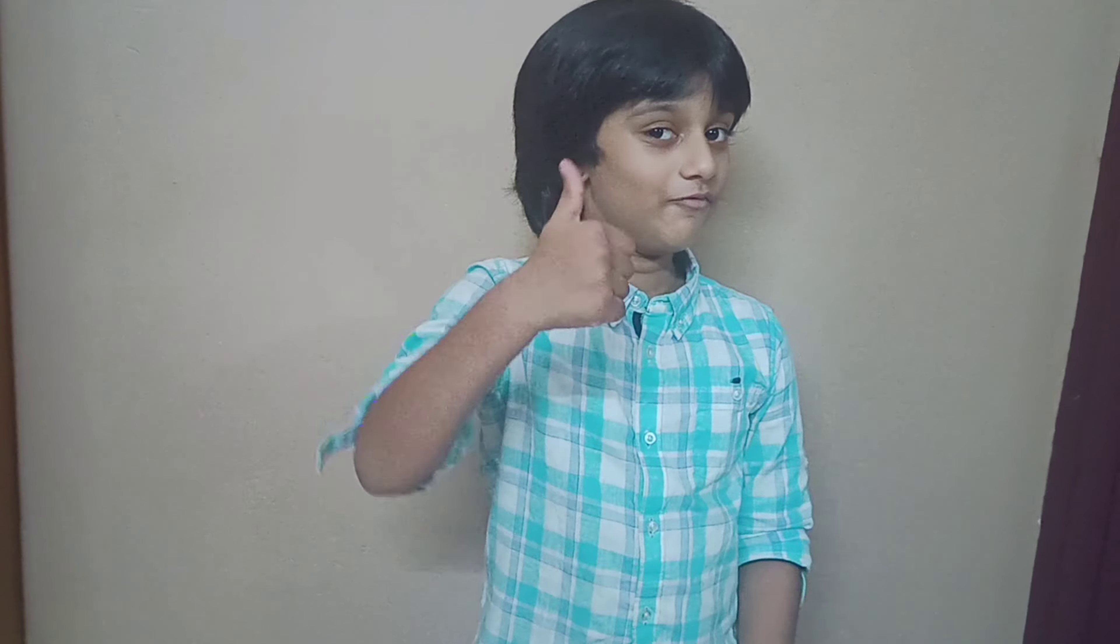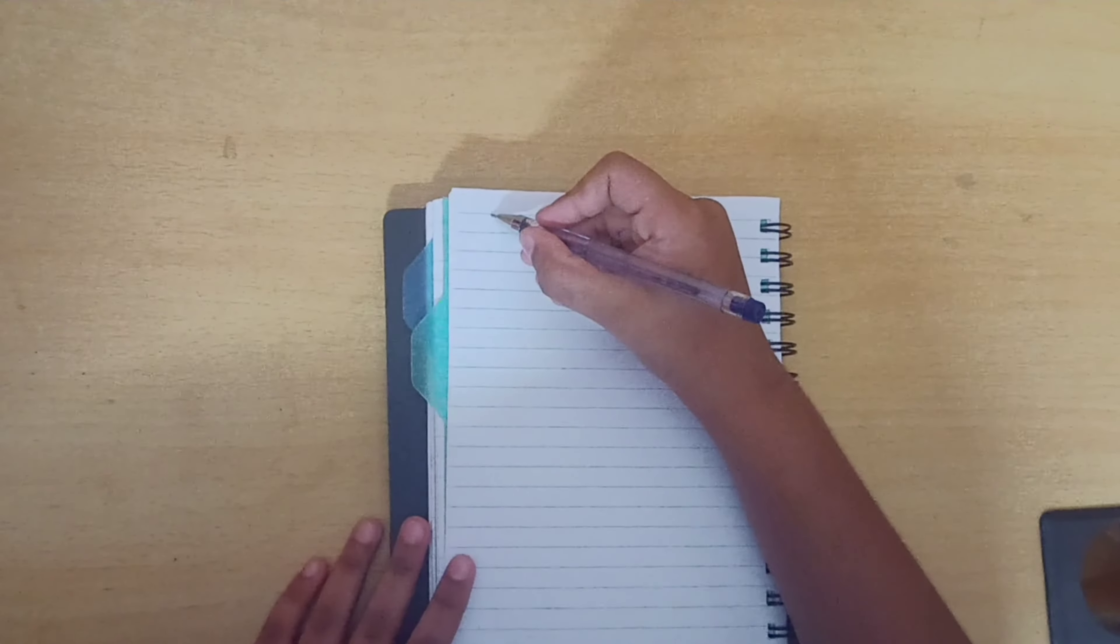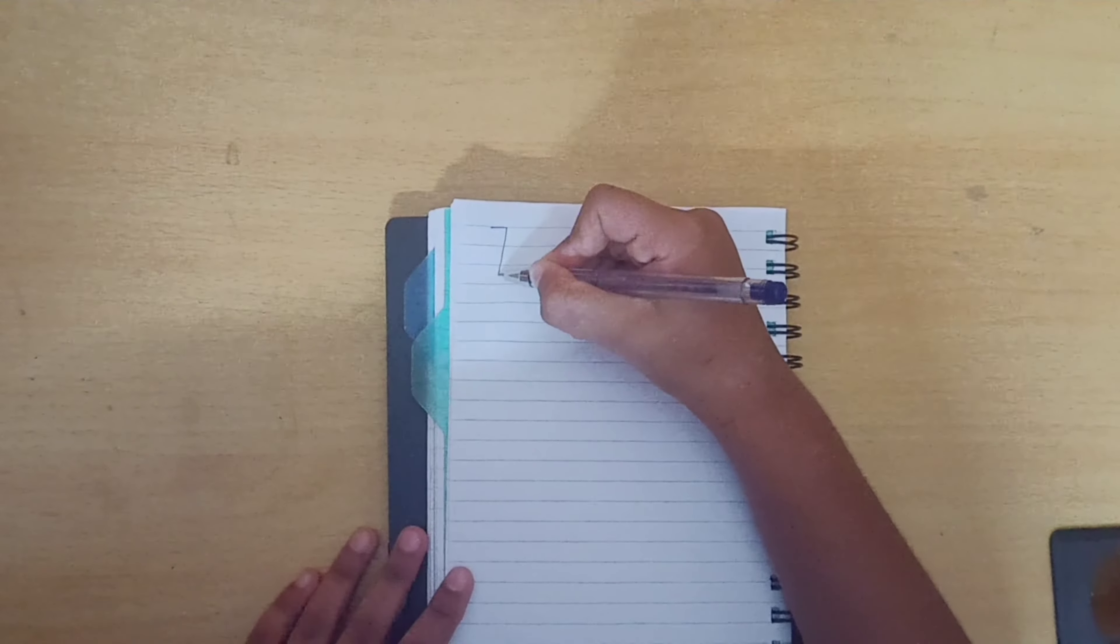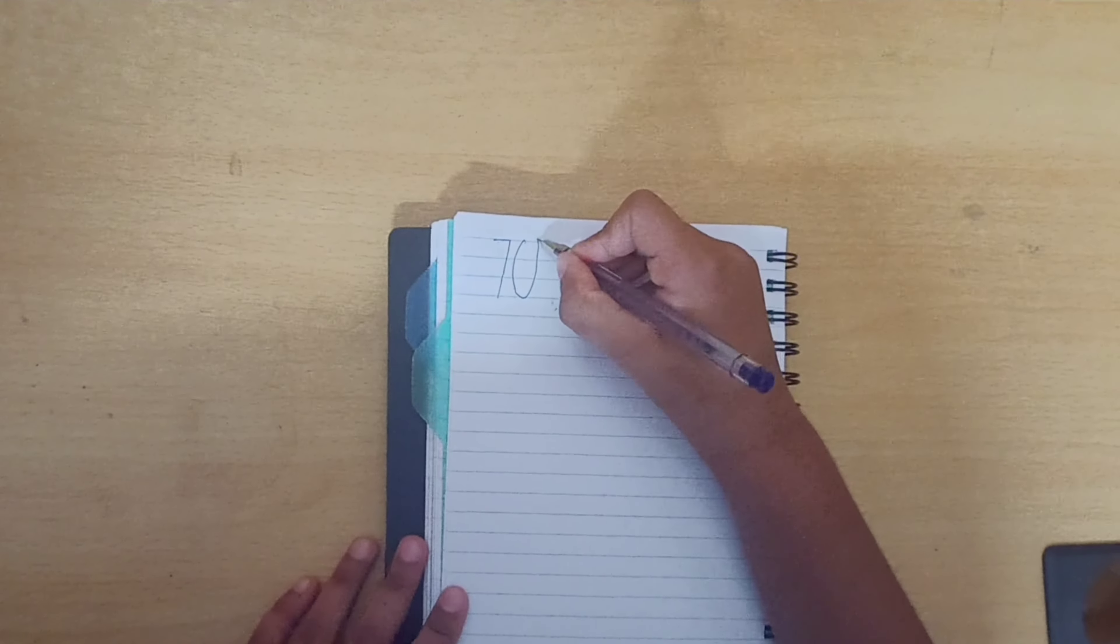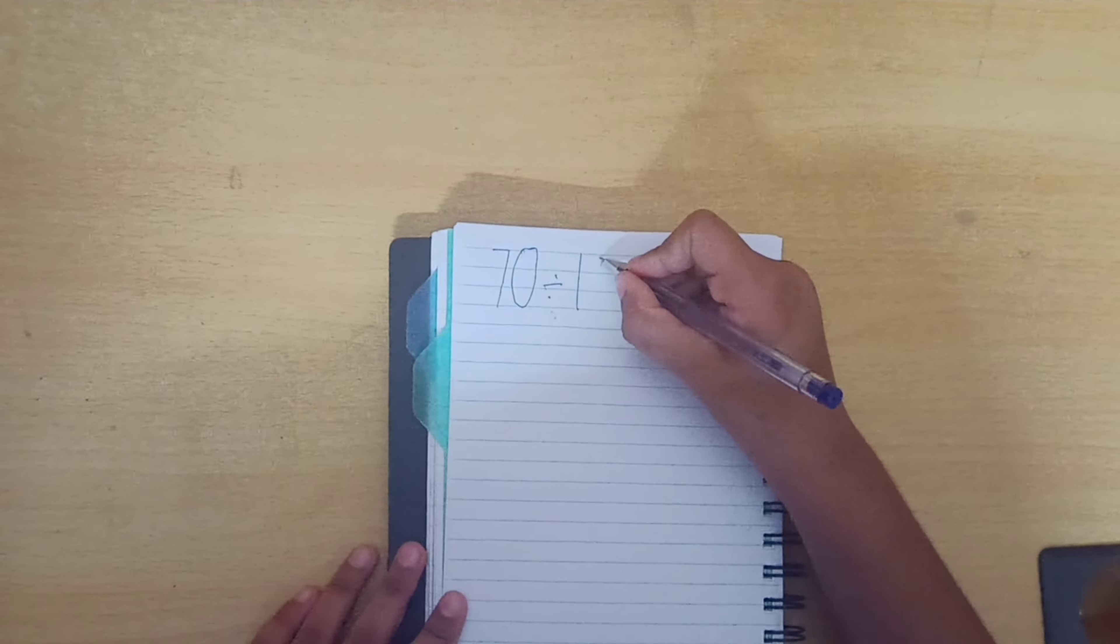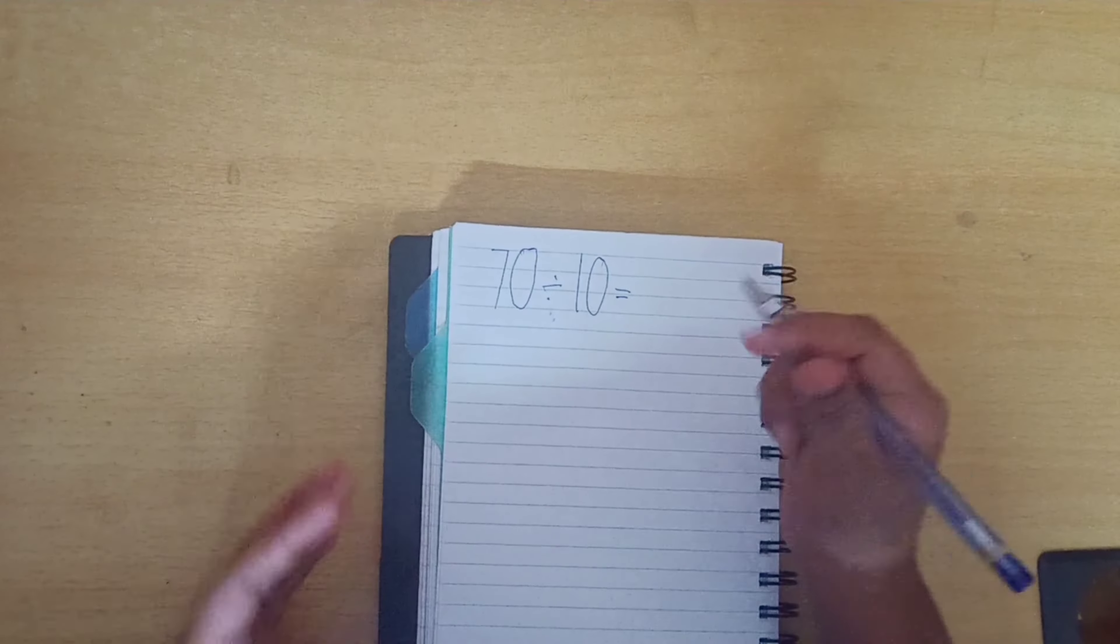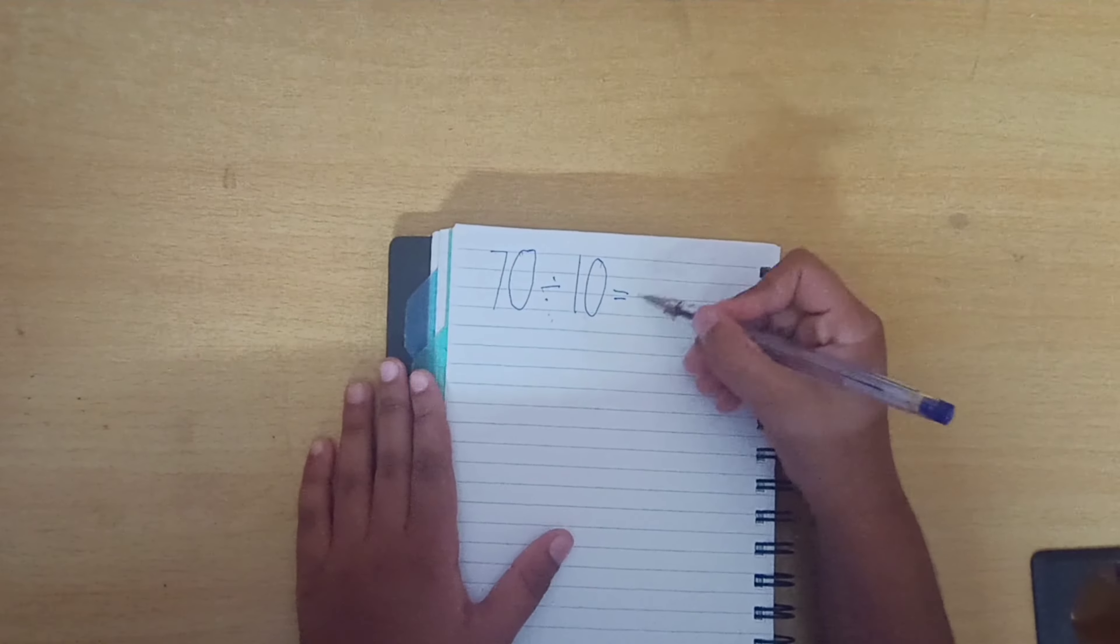Are you okay with that? Okay, very good. Okay, so the first question is 70 divided by 10 is equal to dash. Children, what is the answer?